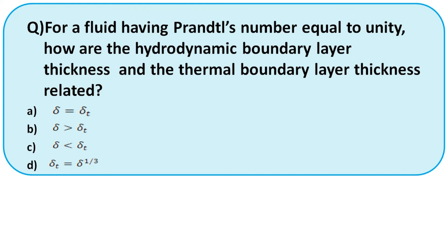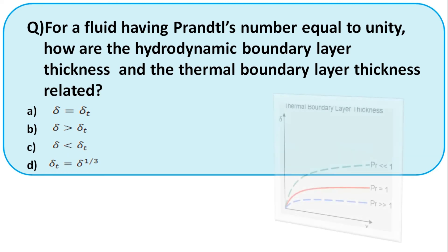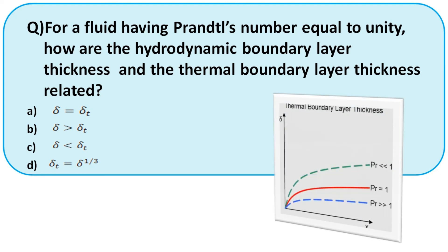If the fluid has a Prandtl number equal to unity, how are the hydrodynamic boundary layer thickness and the thermal boundary layer thickness related? From the expressions we have seen, when Pr = 1, then δ = δ_t. So the right option is option E.